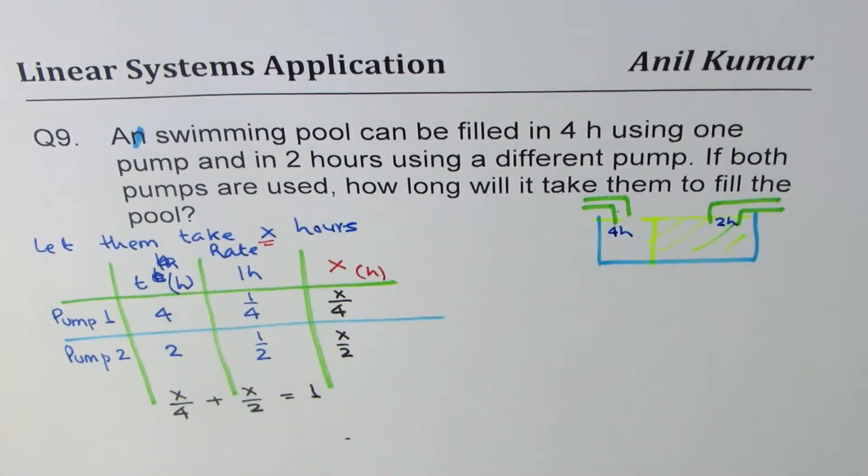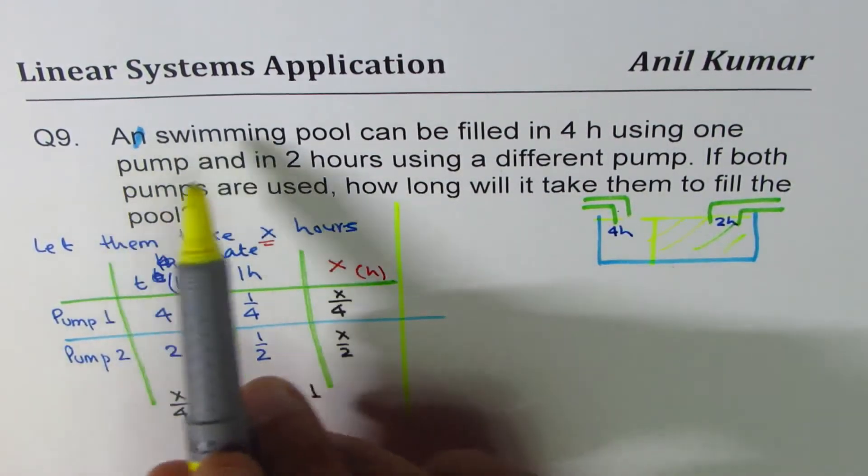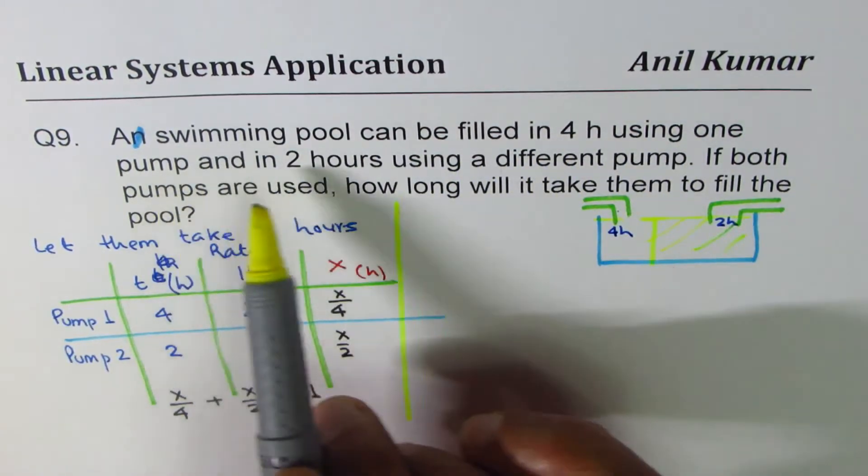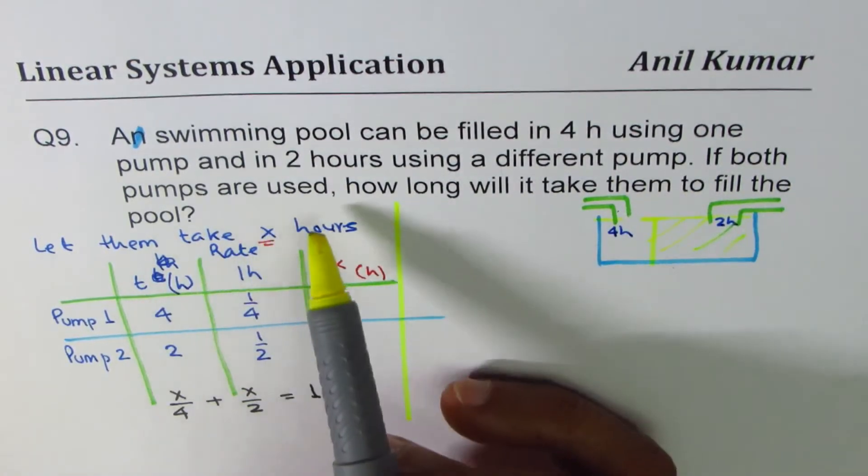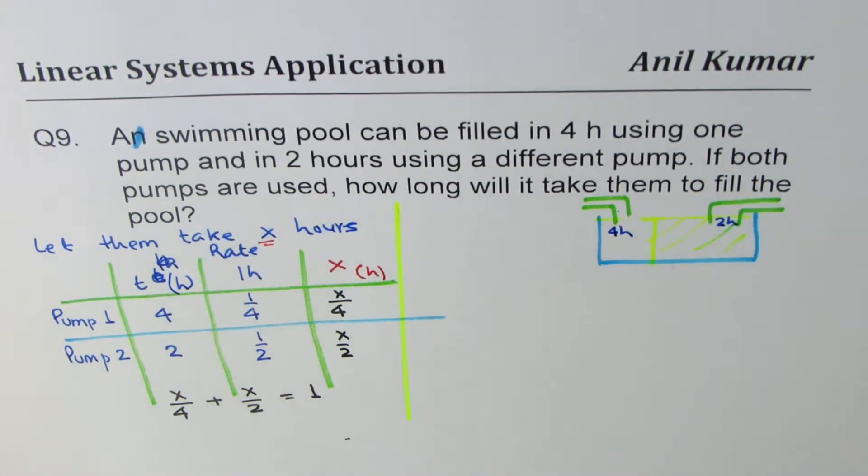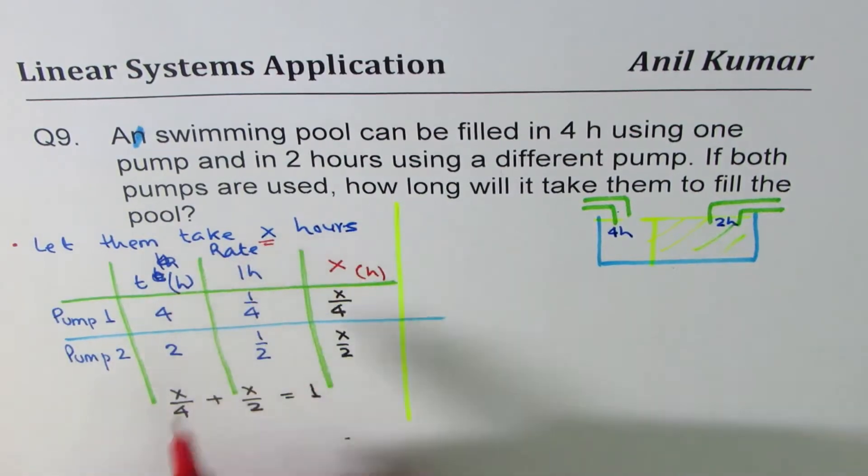Let's go through this question once again, understand our equation, right? A swimming pool can be filled in four hours using one pump and two hours using a different pump. If both pumps are used, how long will it take them to fill? So we say, let, define variable, let them take X hours.